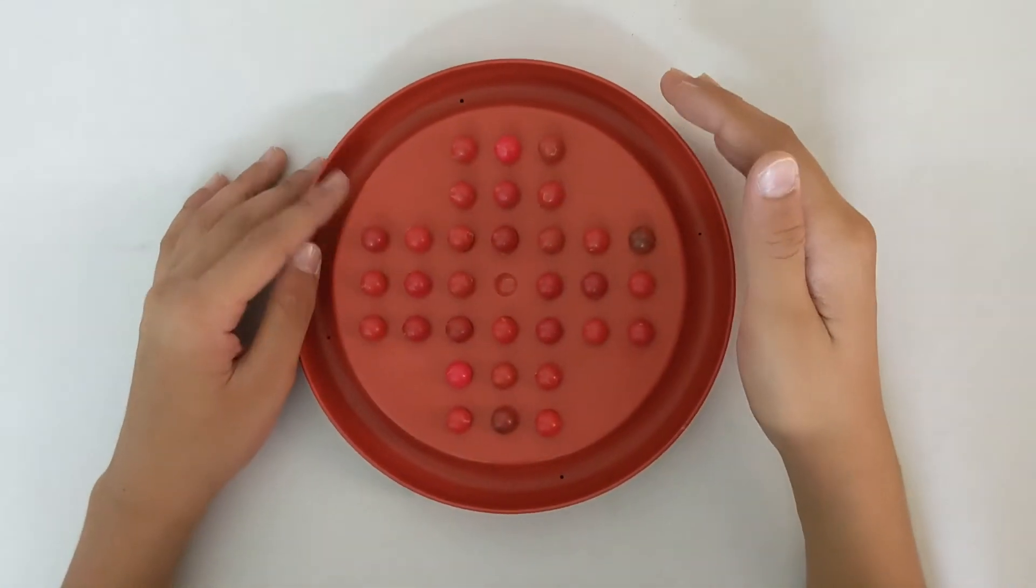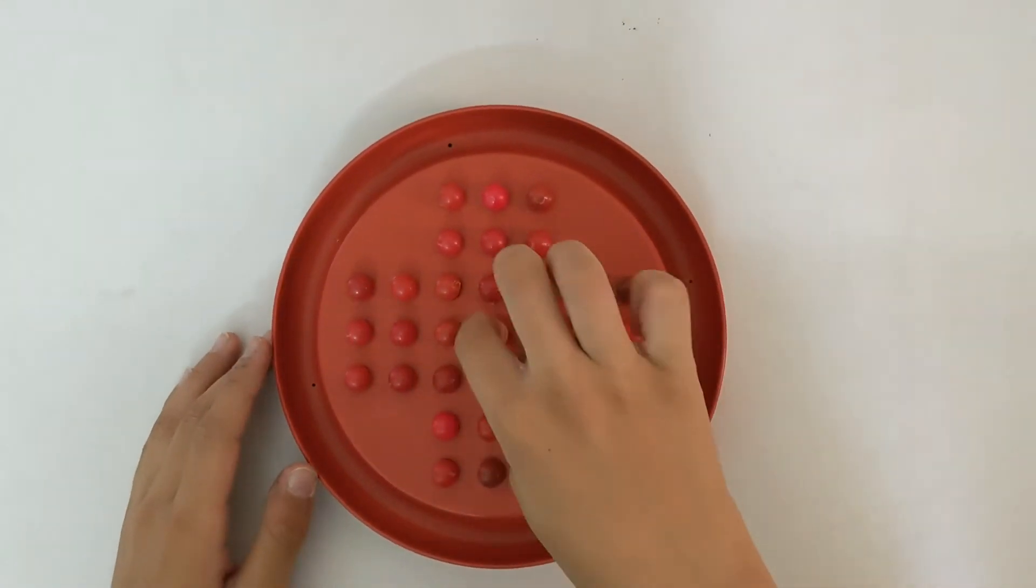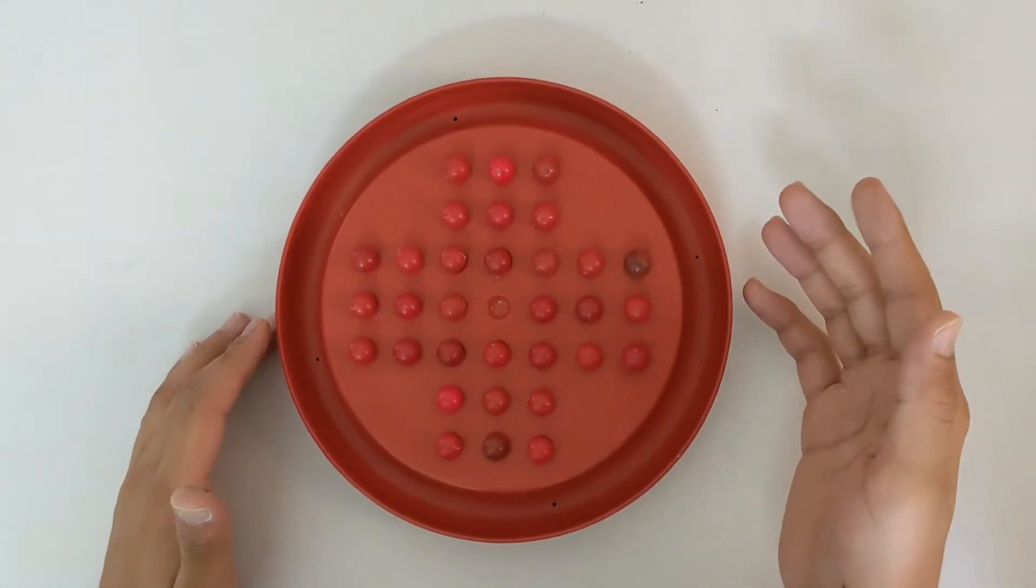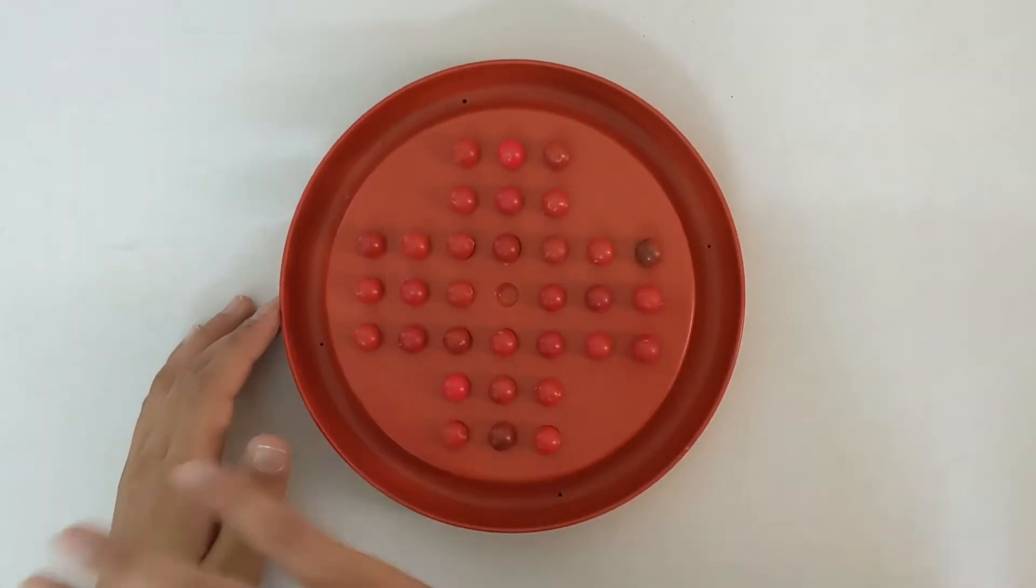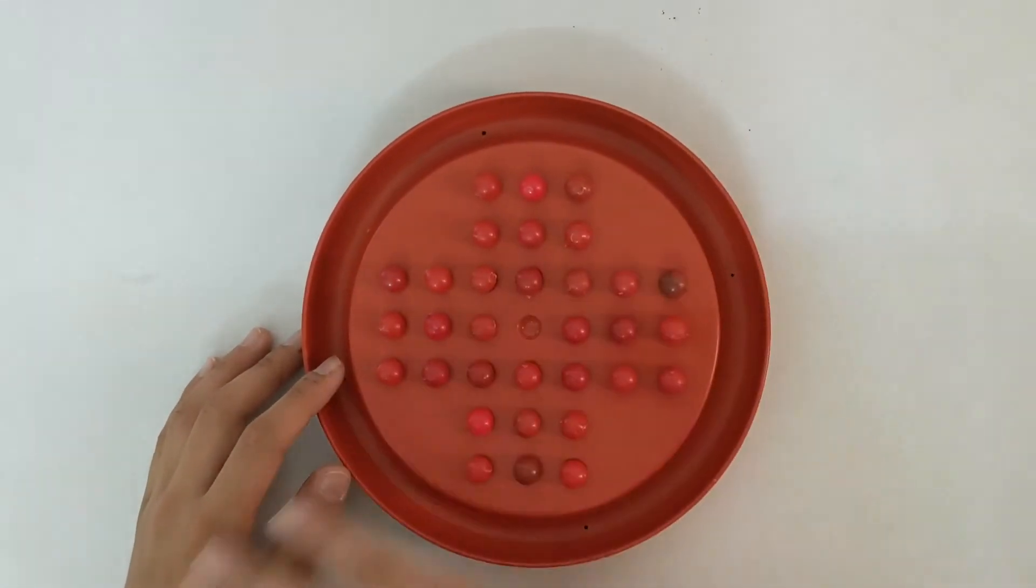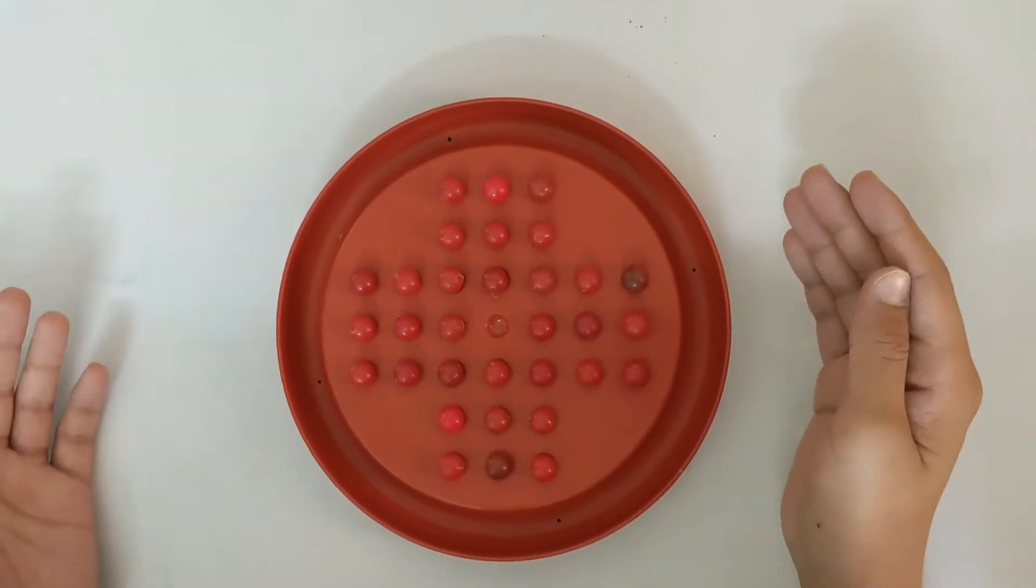So the objective of this game is basically to get 31 balls off the plastic tray and the last one has to be in the center. And you can eliminate the balls or the pegs by jumping over it horizontally or vertically. And this game is pretty cheap. There's a marble version and I have the plastic version and it's only like 100 rupees.